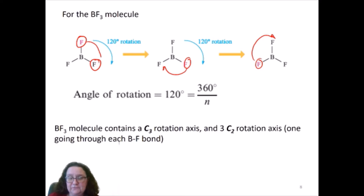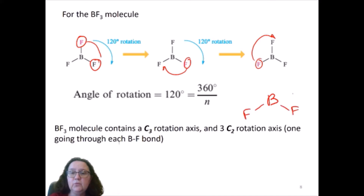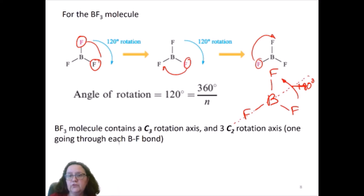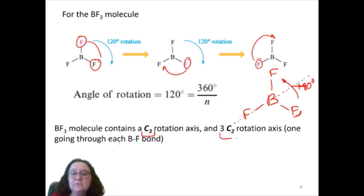There are more axes in this molecule — there are C2 axes, and they go through the boron-fluoride atoms. There's one going through each of the boron-fluoride bonds. If you think of an axis in the plane of the molecule going through a particular fluoride-boron atom, a 180-degree rotation around that axis would swap the other two fluoride atoms but still give a superimposable structure identical to before the rotation. So there is one C3 rotation axis perpendicular to the plane of the molecule and three C2 rotation axes through each of the boron-fluoride bonds.